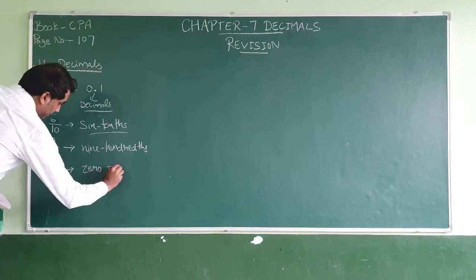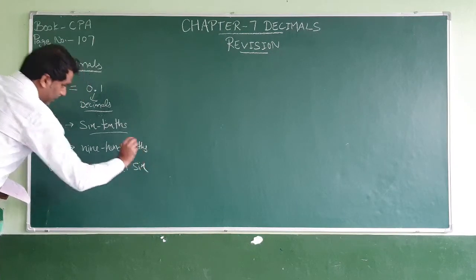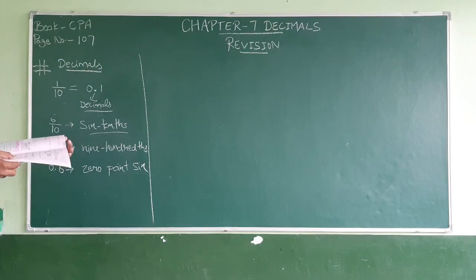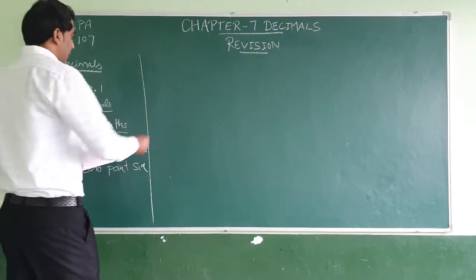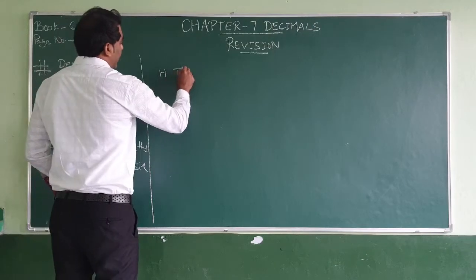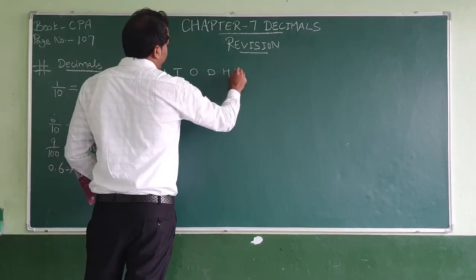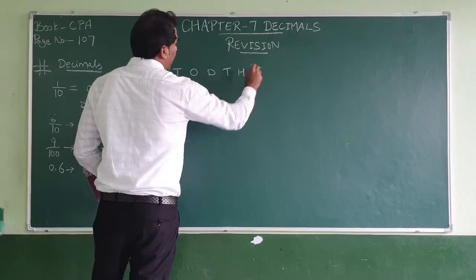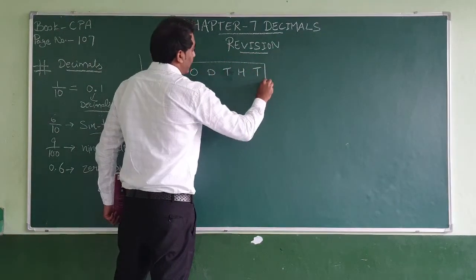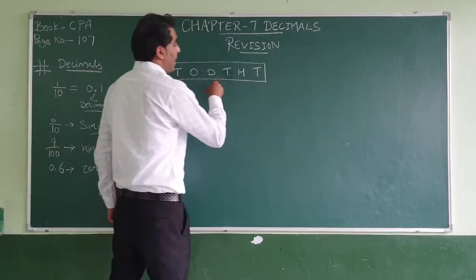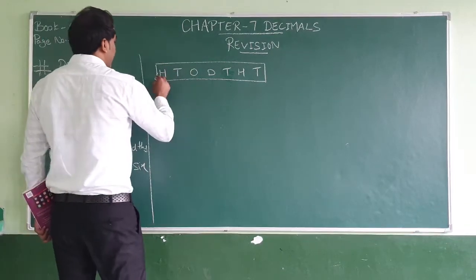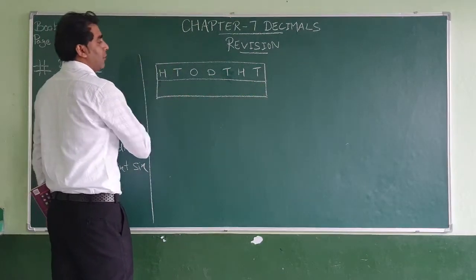Next we have decimal place parts of decimals. There is a table: ones, tens, hundreds, thousands. This table is the most important thing — it is the backbone of this chapter. If you don't know this table, you cannot solve the columns of decimals.